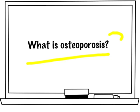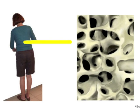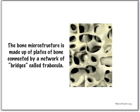Hi, this is Dr. Diane Schneider with the answer to your question: what is osteoporosis? The best way to describe osteoporosis is to start by looking at a piece of normal bone from the spine, as if you were looking under a microscope. In this microscopic view, you can see how the bone is made up of plates of bone connected by a network of bridges called trabecula.